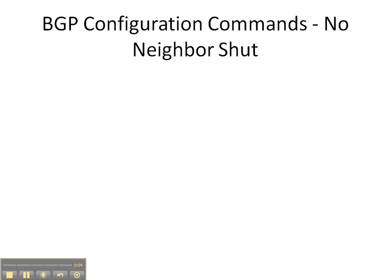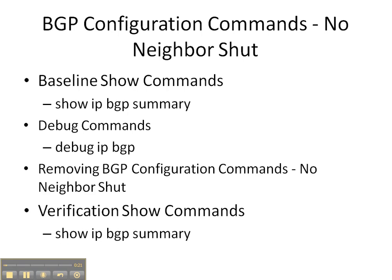In this video cheat sheet, we're going to be doing no neighbor shut commands. Specifically, I'm going to be showing you how to remove specific neighbor commands from BGP. We'll start off with some baseline commands - show IP BGP summary - to make sure the adjacencies are still down from the last video cheat sheet, when we shut down the BGP neighbor adjacencies between routers 1 and 2, and routers 4 and 2. Then we're going to do a debug IP BGP on router 2 to watch the events unfold.